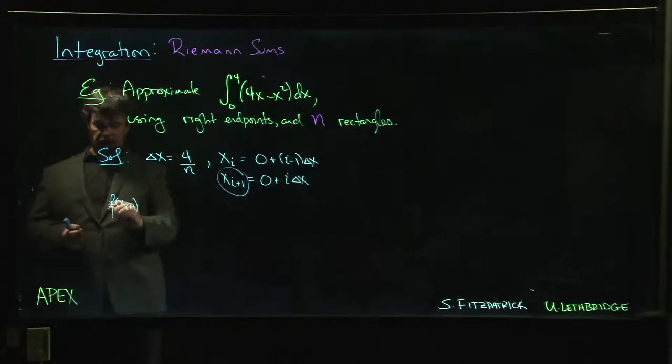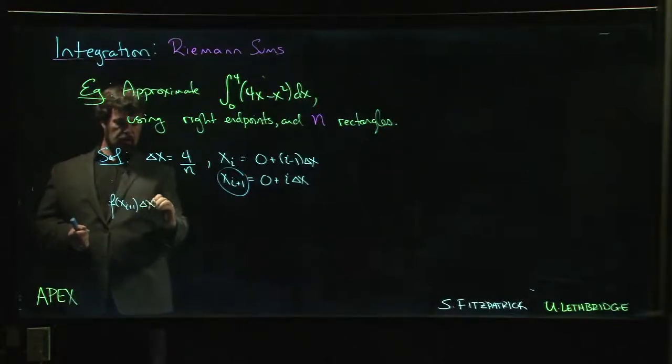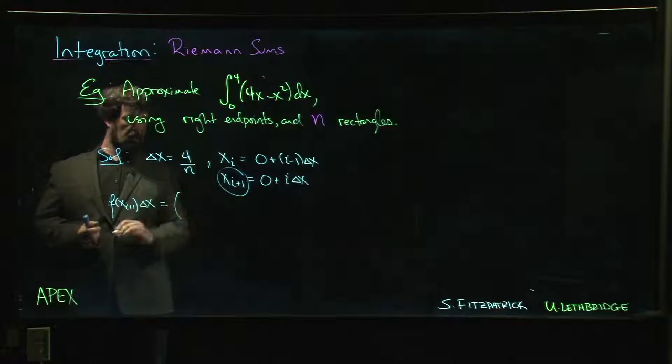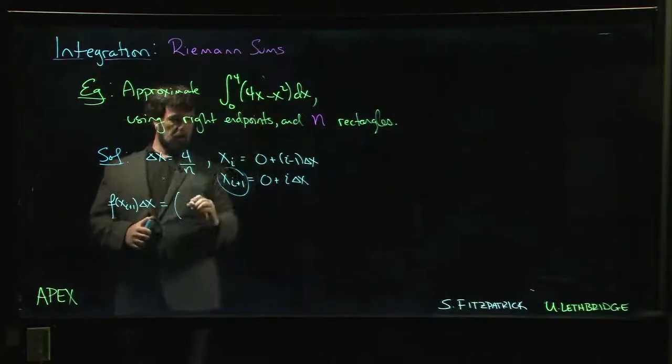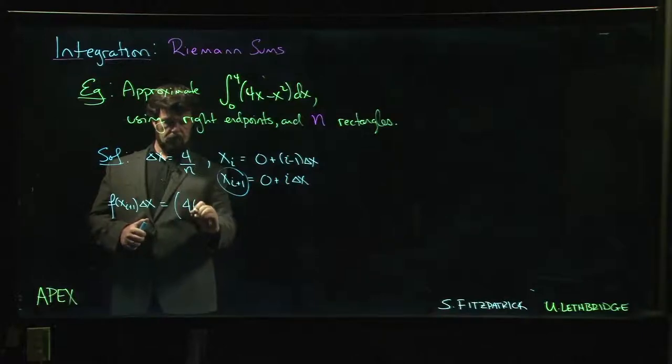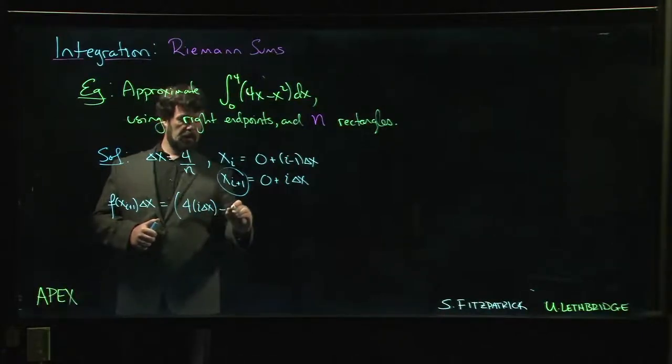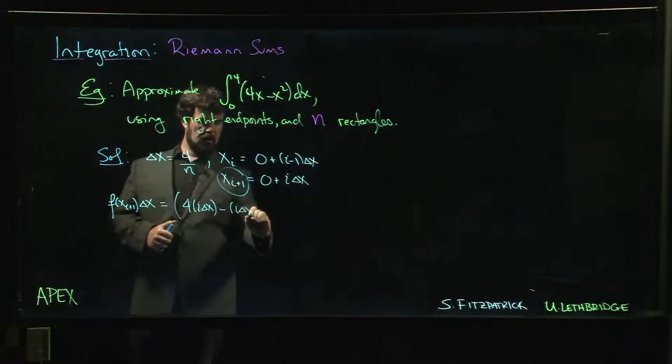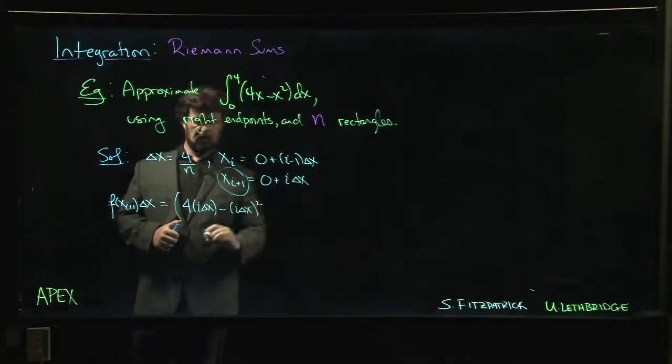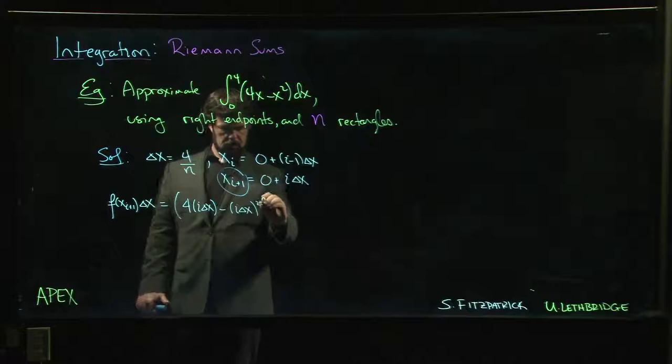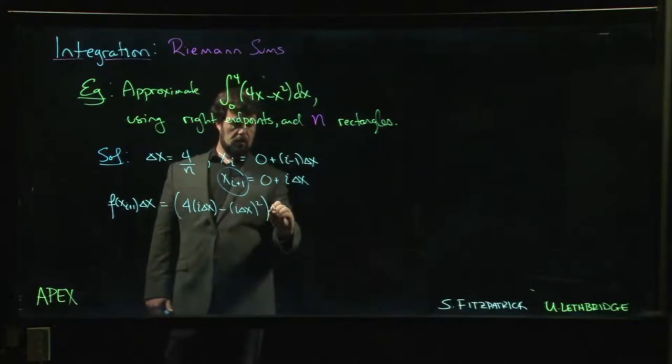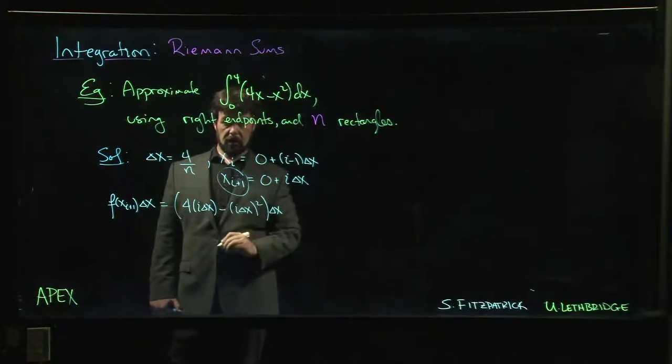We work out now our F of Xi plus 1, that's our F at the right endpoint times Delta X. It's going to be 4 times i times Delta X minus i times Delta X squared, and then we multiply by Delta X.